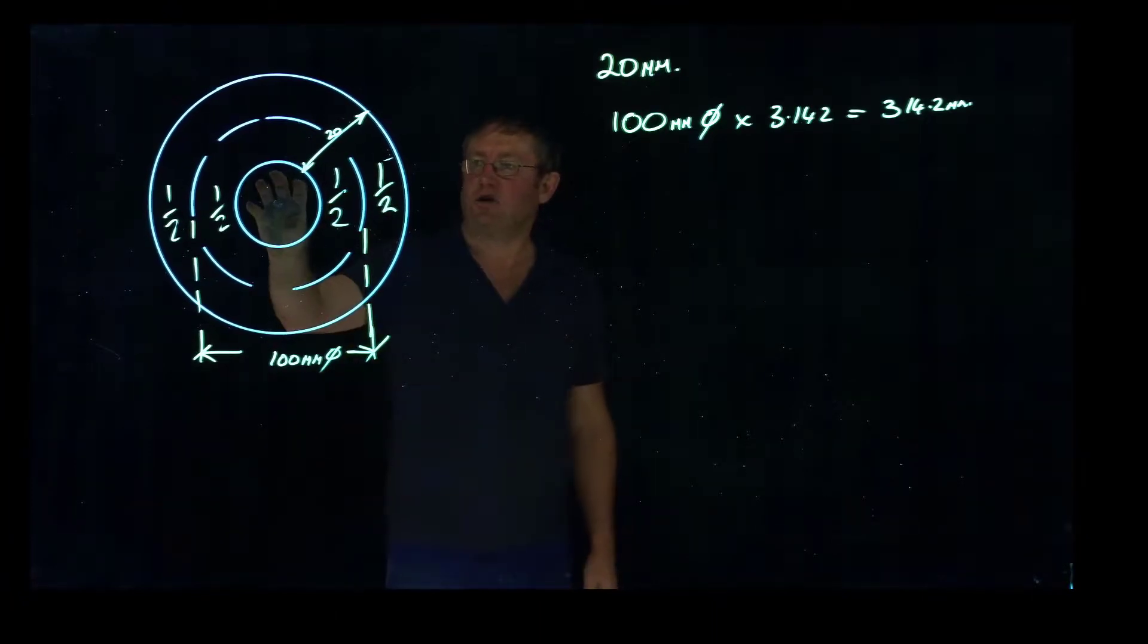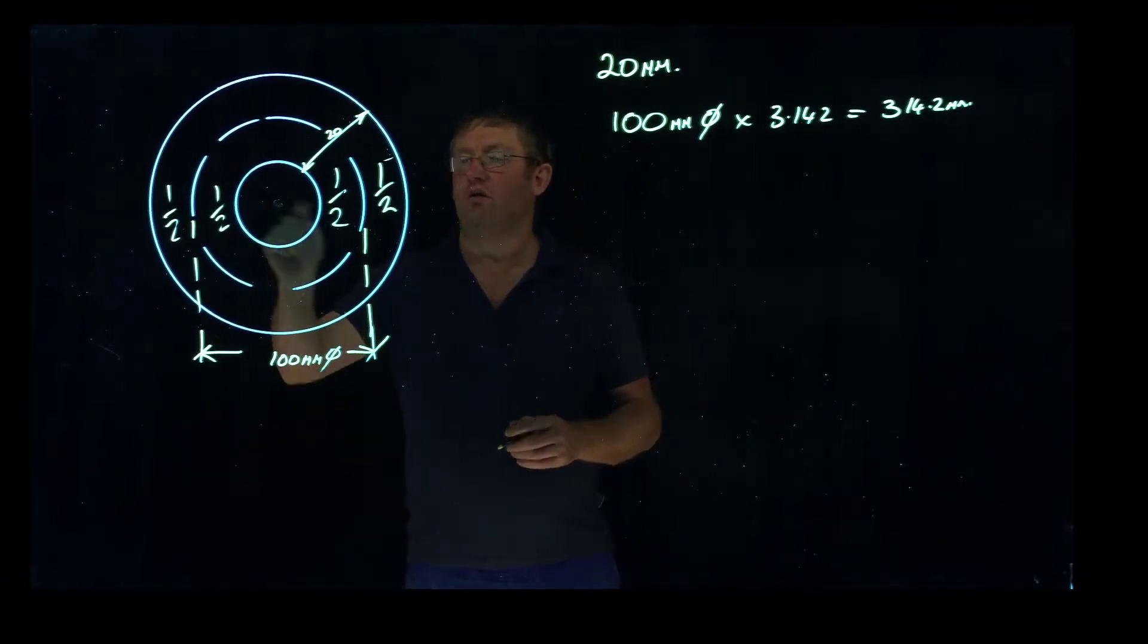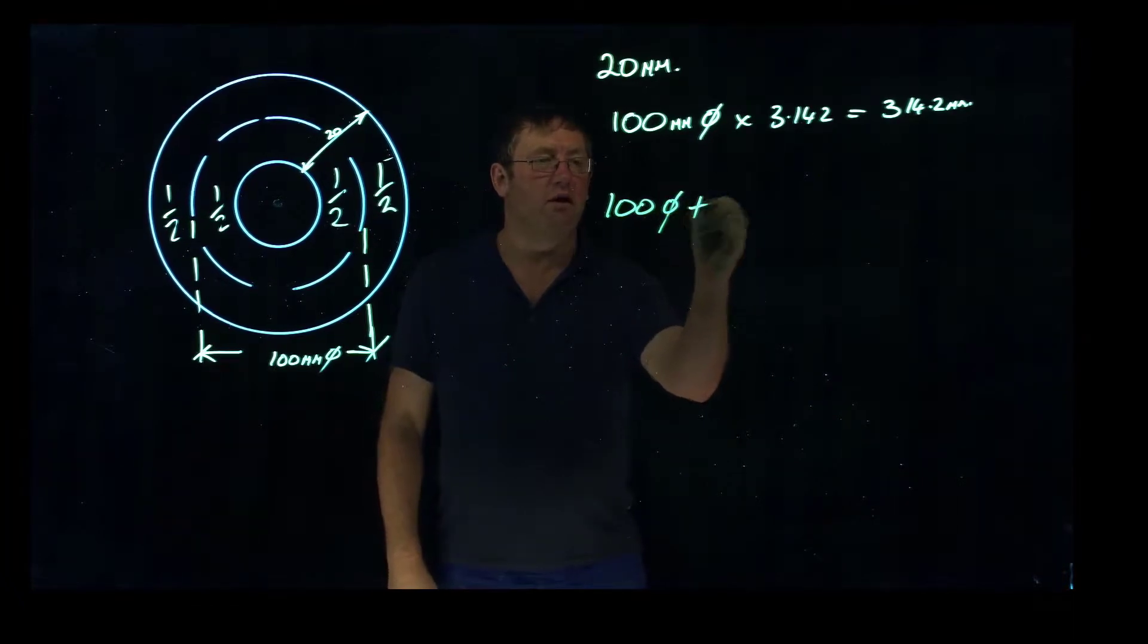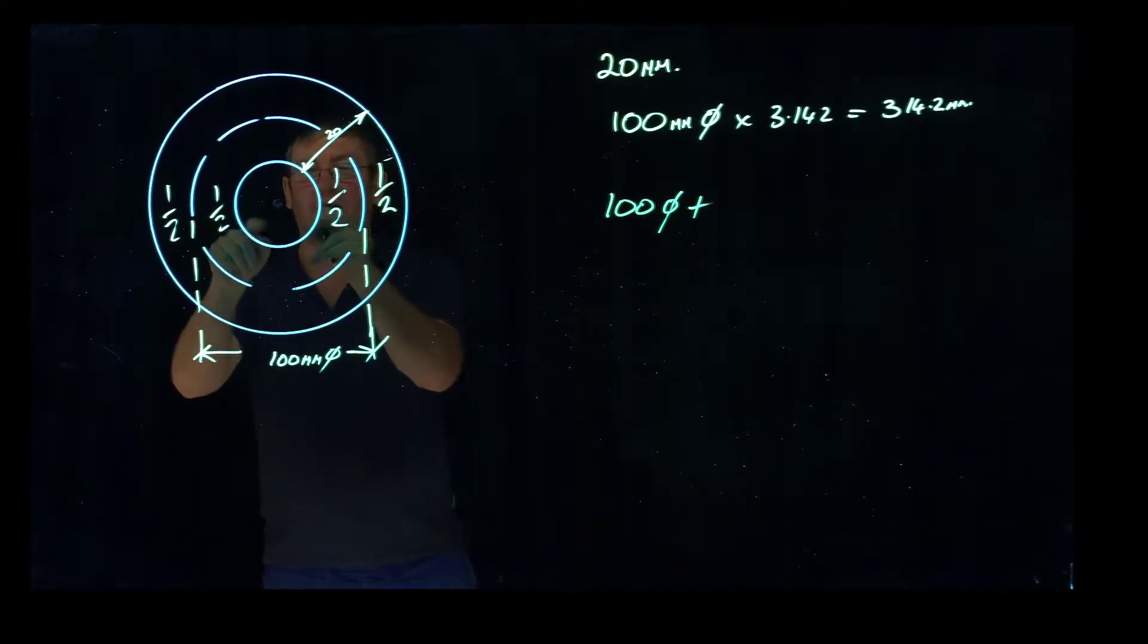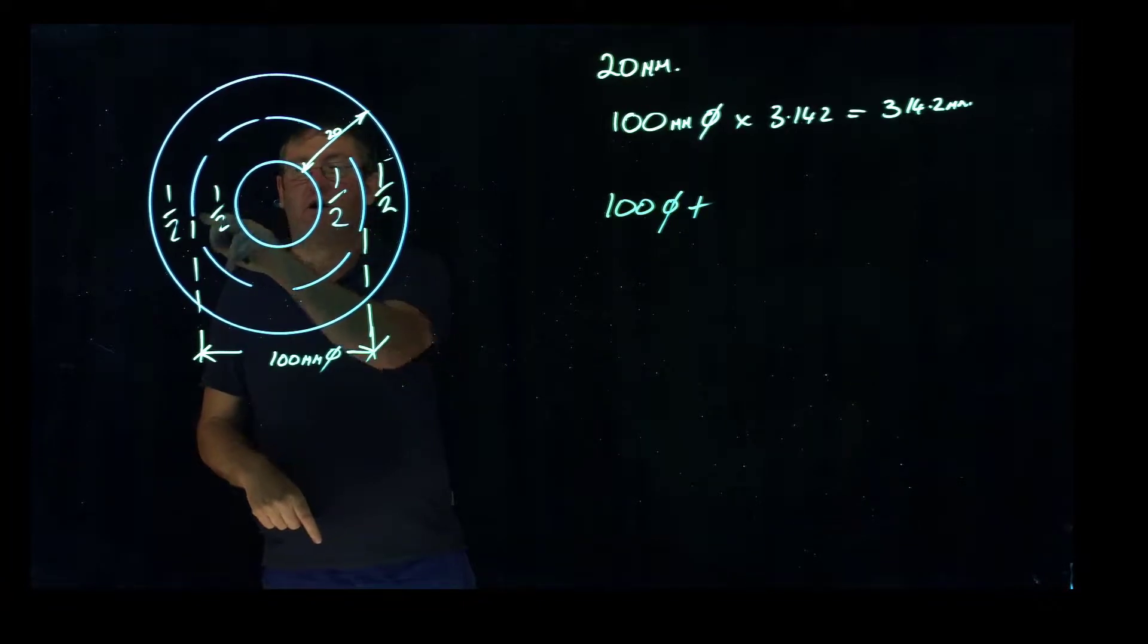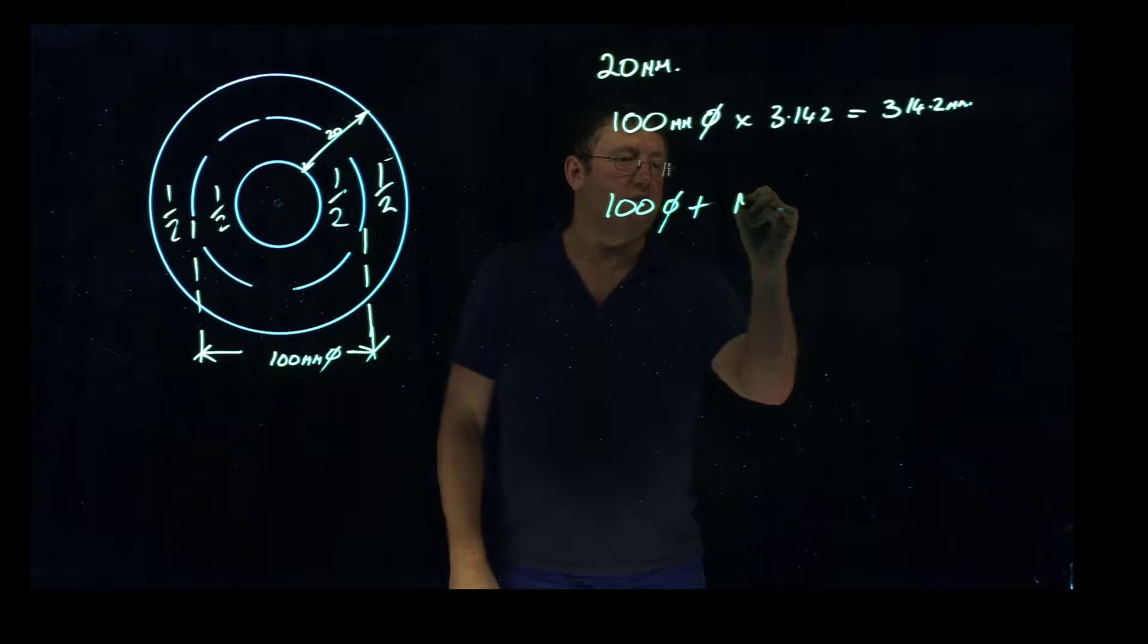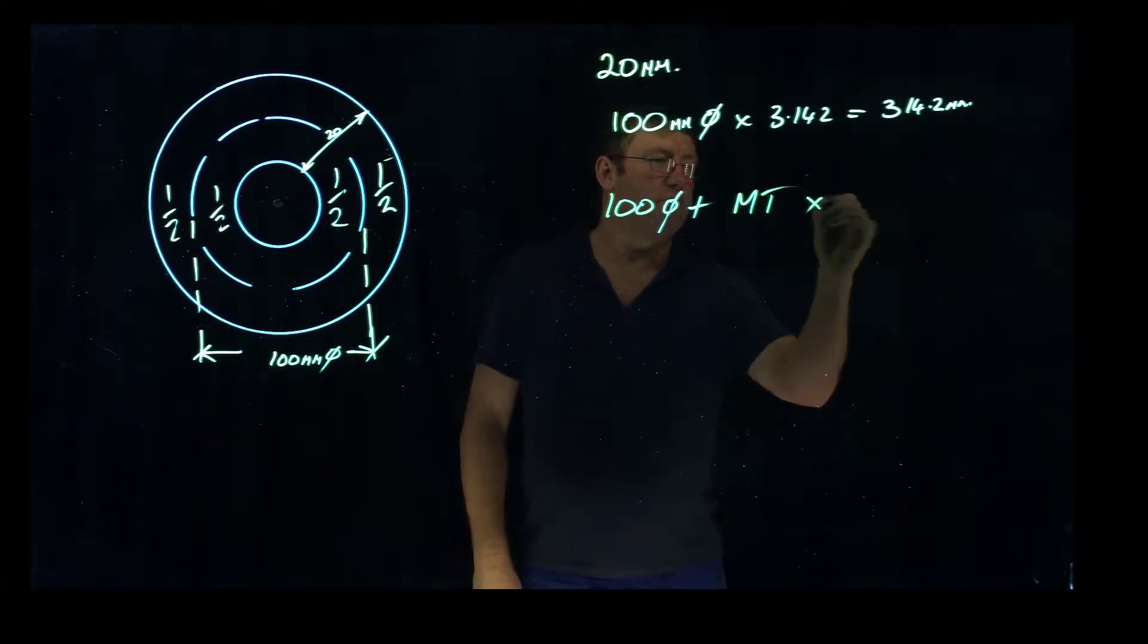Now what say I want the internal to be 100mm across this point here? What I have to do is I make it 100mm diameter, and I need to add a material thickness, half either side, so that we get this line in at this point here. Material thickness times pi.